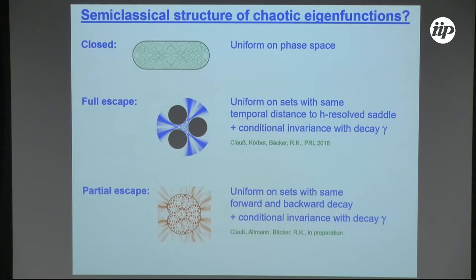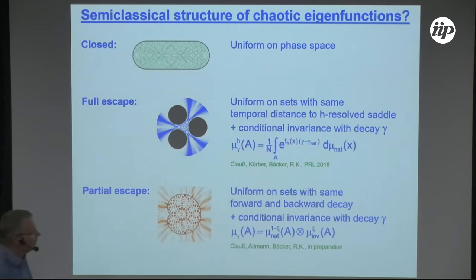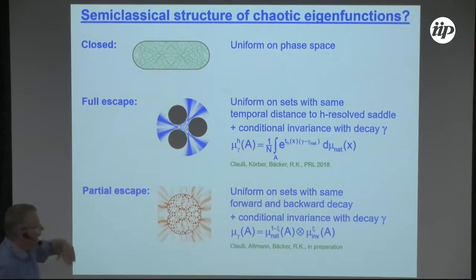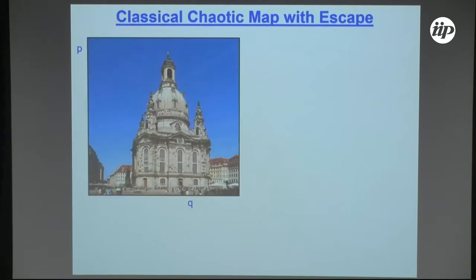What I want to show you now is, first, that these propositions work, and then I will explain the terms in more detail. To make them work, we have to have some constructive statement — how to actually construct these classical measures — which we then can compare to the quantum eigenstates. I will do all this for some quantum map.